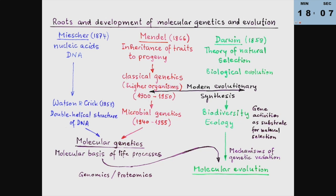That notion was not widely accepted by life scientists, because they felt genetic information must be something very complex — probably proteins, which are composed of about 20 different amino acids — whereas nucleic acid has only four letters in the alphabet.